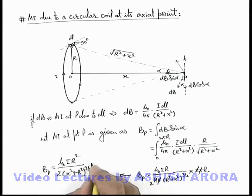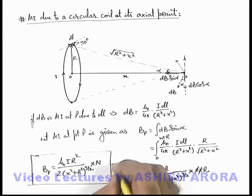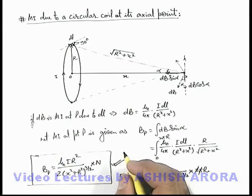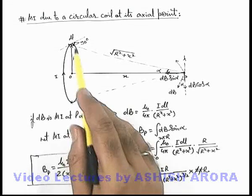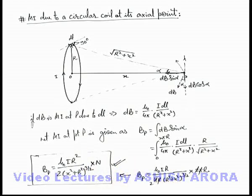And if there are n turns in the coil we can multiply it by n also, and this is the final result we are having for the magnetic induction due to the circular coil at a point p, where n are the total number of turns.